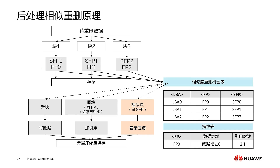Next, let's look at the principle of post-processing similarity deletion. It involves data first being written to our disk, while system resources are used for handling business operations. When the system is idle, the data is read and deletion proceeds. Similarly, data to be deduplicated is partitioned into blocks, and a fingerprint is calculated for each data block using a sequential fingerprint algorithm. The data is written to storage and the fingerprint and location information are recorded in our deduplication opportunity table.